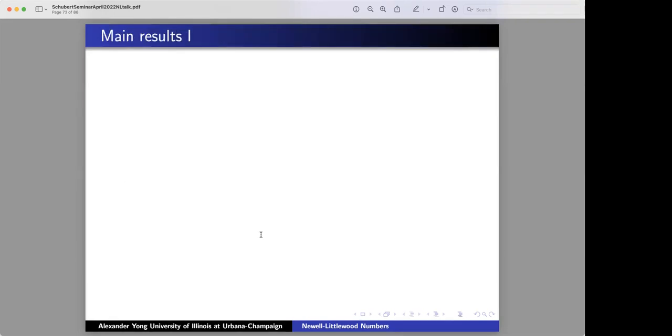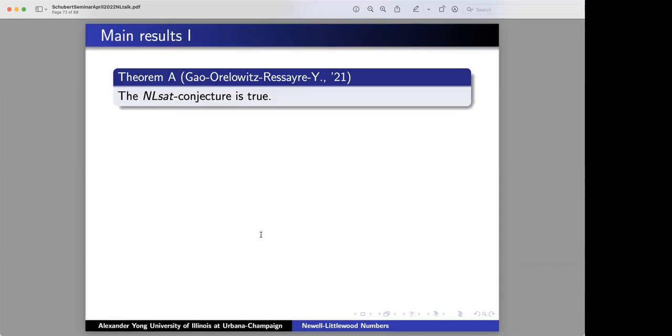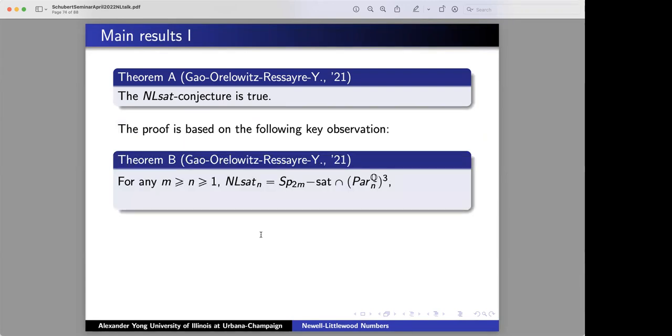All right. Now I want to talk about our main results. The first theorem is that the conjecture I just stated is in fact true. And that's with Gao, Avrielowitz, everything I'm about to state is with the four of us. And the proof is based on the following, let me call it observation.